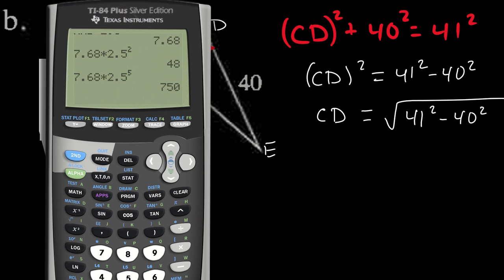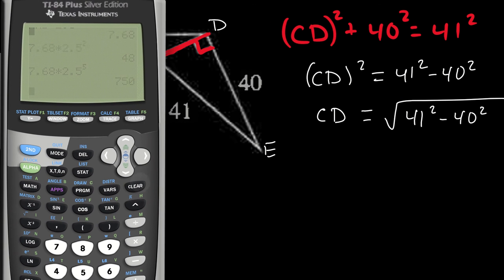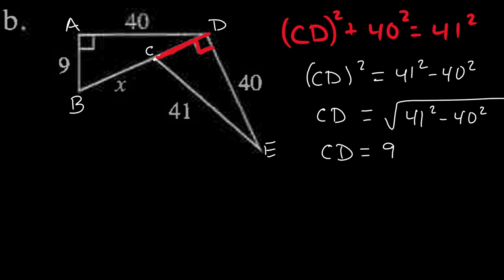So CD equals the square root of 41² minus 40². I need to find that difference and then find the square root. 41² minus 40² gives me 81, and the square root of 81 is 9. So the length of segment CD is 9 units long.